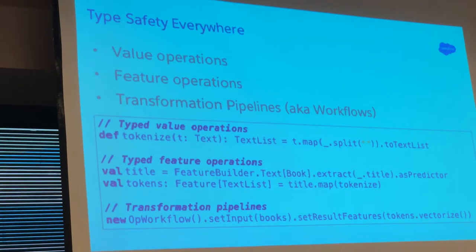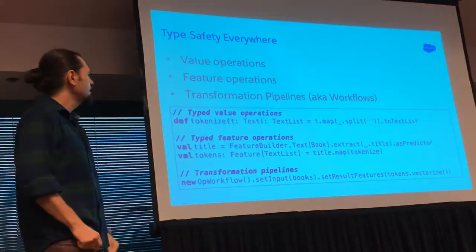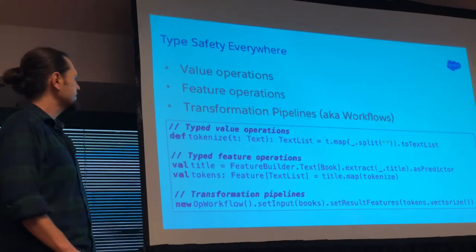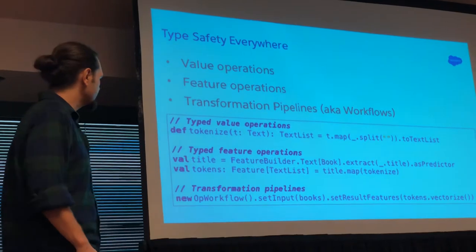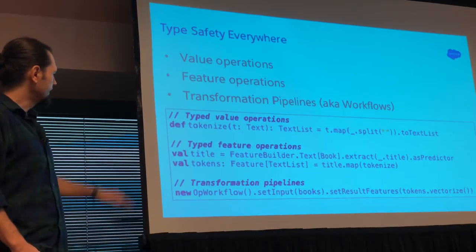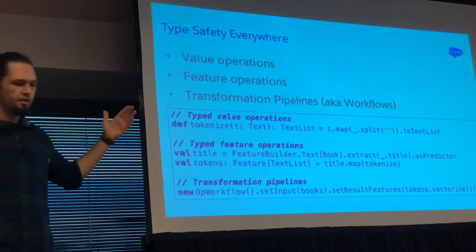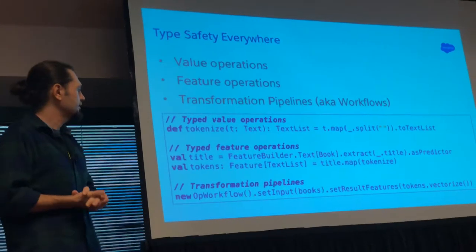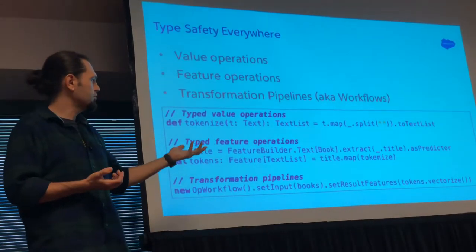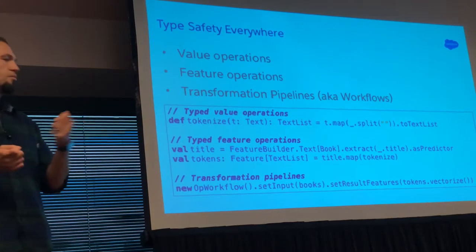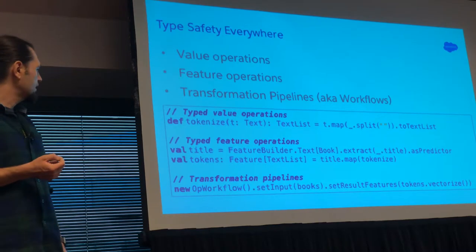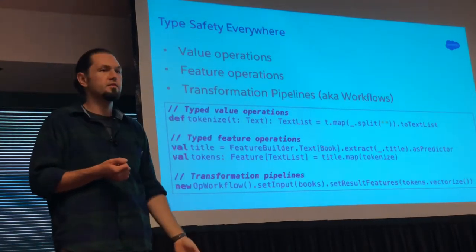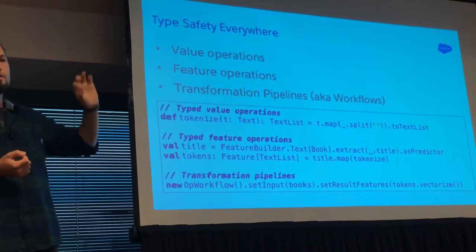Here's a little snippet of code that's fully compatible with the library. Say I want to tokenize some text — it will return a text list. I'll just do t.map: apply the map operation on the text value, if it's present I will split it, and then convert it to a text list. The next line defines a feature for my machine learning application — a feature is basically a column in your data. Let's say my input data is a book and I would like to take the title of this book as my predictive feature — it will be used for predicting, say, the price of the book. And then I can do title.map tokenize, which applies that function to every single cell in that column.